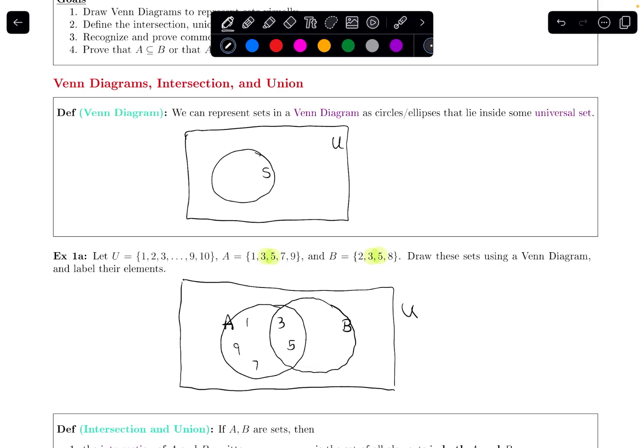So B also has the elements 2 and 8 inside of it, but those are not part of A. And then there's some integers that are in the universal set that aren't in A or B. So let me label these. Things like there's 4, and there's 6, and there's 10.